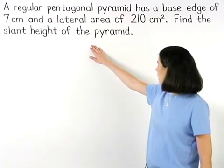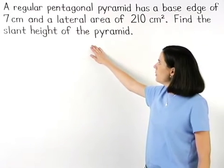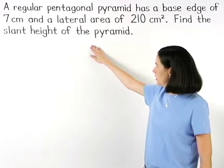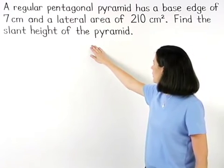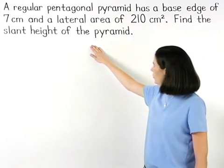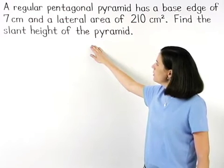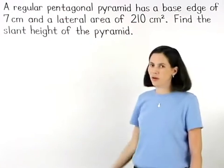A regular pentagonal pyramid has a base edge of seven centimeters and a lateral area of 210 square centimeters. Find the slant height of the pyramid.